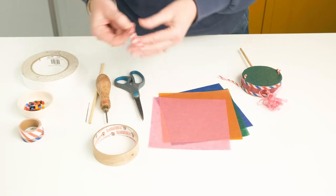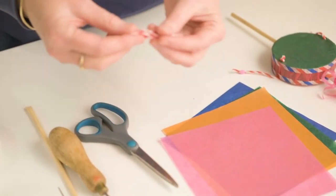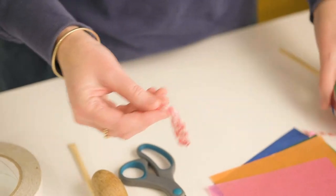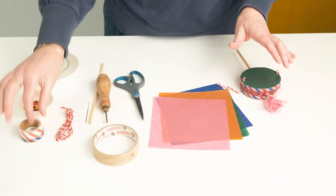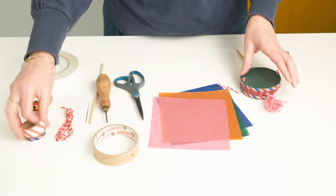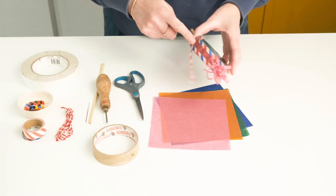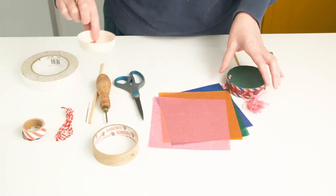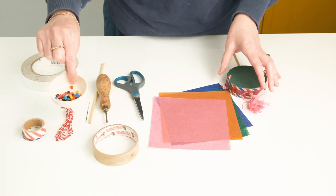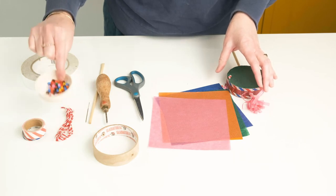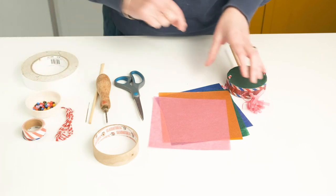I've got some string, could be any string. I found this stripy string and I thought it was a bit more festive. I've got some decorative tape just for decorating the side of the drum. And you'll recognize these hammer beads. Surely there'll be some down the back of your sofa if you haven't got any in your cupboard.